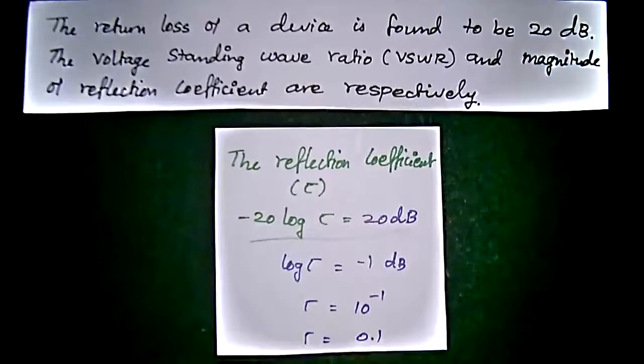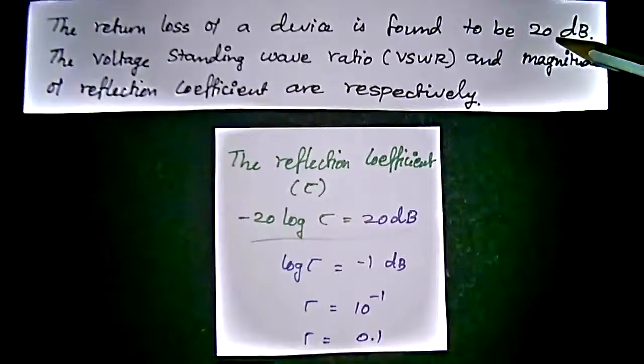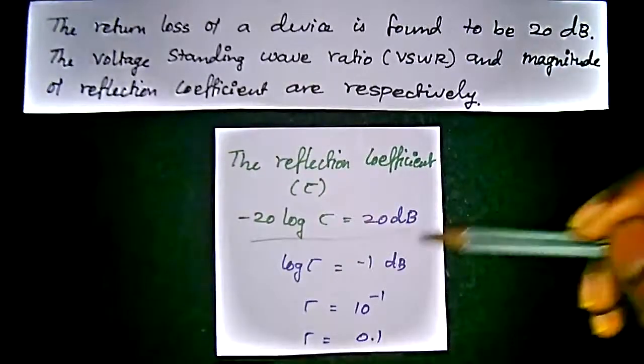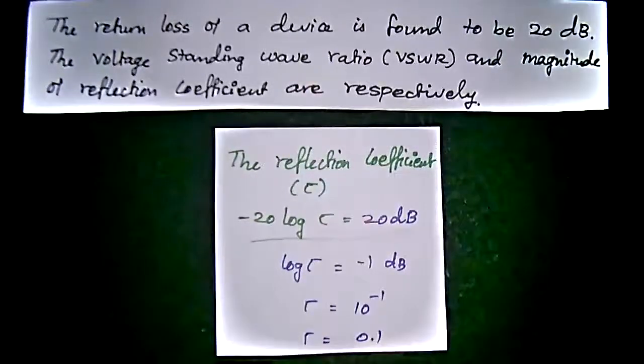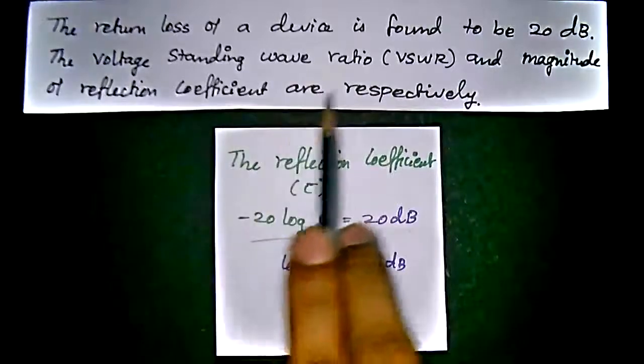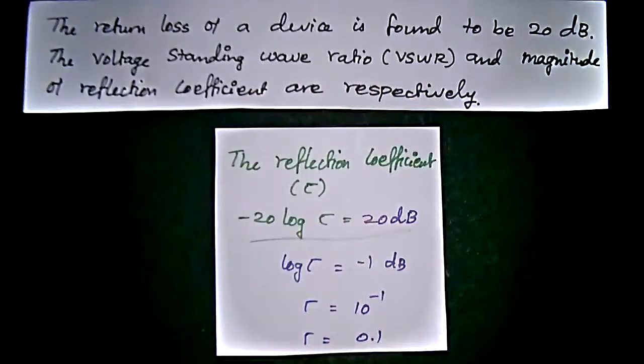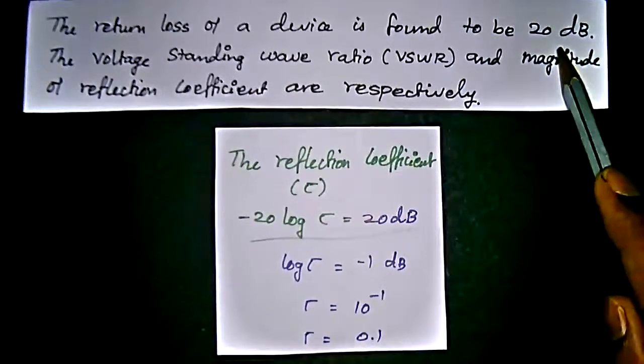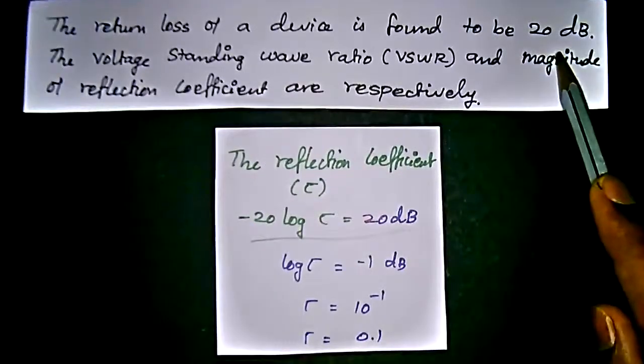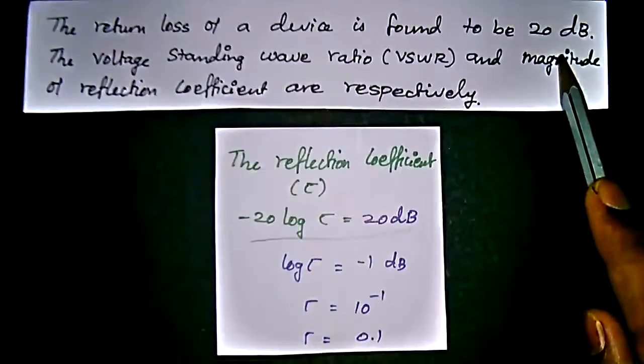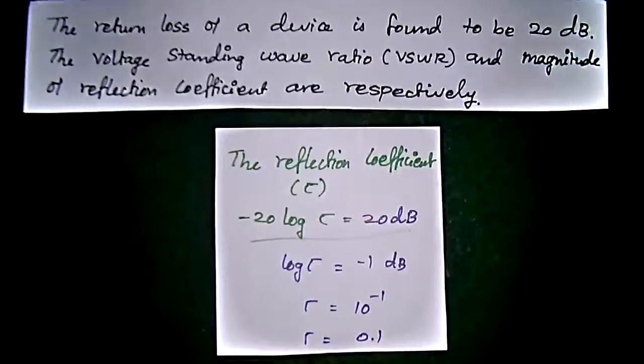So, we have to find the, because the return loss is given in the problem itself, that is, question itself. We should go for how to find that tau value and standing wave ratio, that is, VSWR. We should find that using the value given in this problem which is return loss.